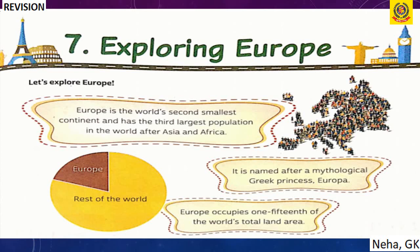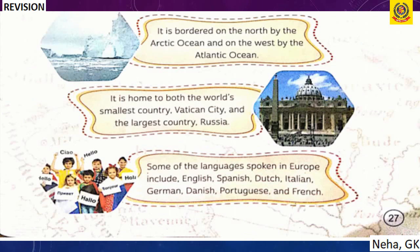Europe is bordered on the north by the Arctic Ocean and on the west by the Atlantic Ocean. It is home to both the world's smallest country, Vatican City, and the largest country, Russia. Languages spoken in Europe include English, Spanish, Dutch, Italian, German, Danish, Portuguese and French.